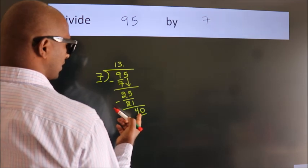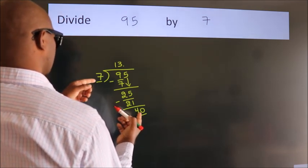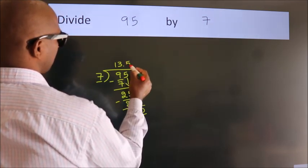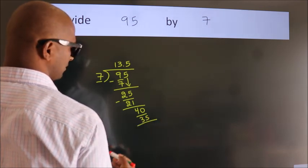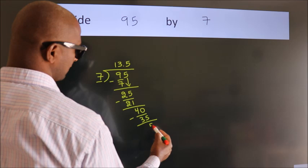A number close to 40 in 7 table is 7 fives 35. Now, we subtract. We get 5.